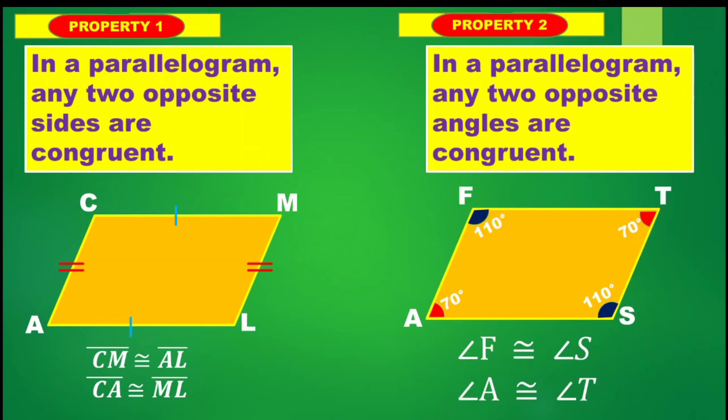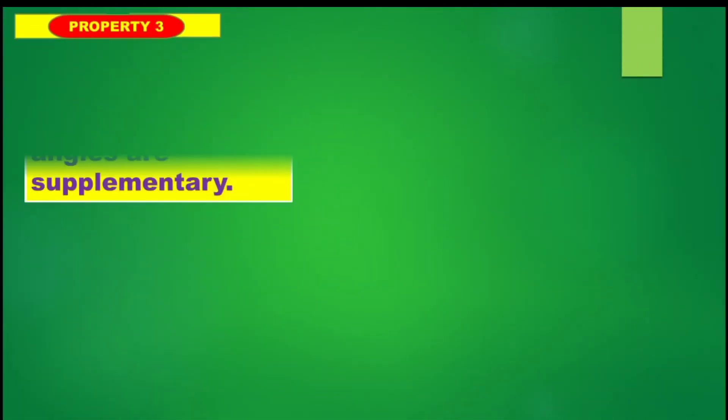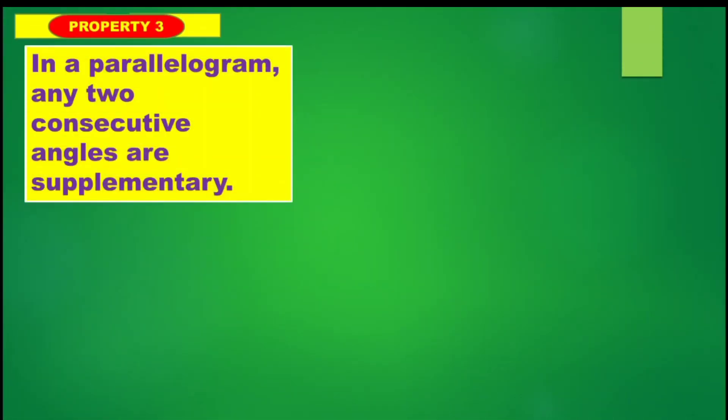So angle F is congruent to angle S, and angle A is congruent to angle T. Let's move on to property number three. It says that in a parallelogram, any two consecutive angles are supplementary.